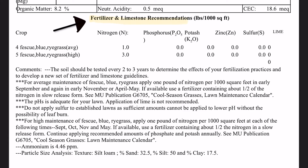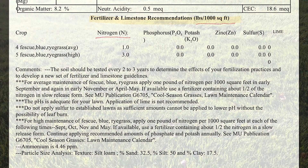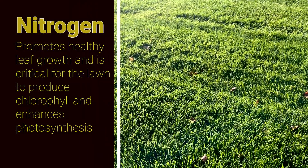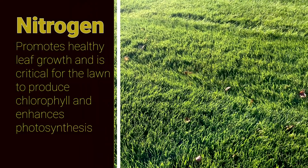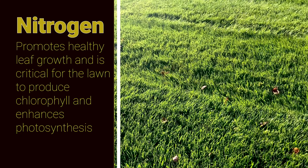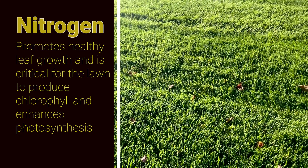Last, we look at the fertilizer and limestone recommendations. Here we see various chemicals contained in fertilizers and how much to apply in pounds per 1,000 square feet. The only recommendation from the soil test report is to apply nitrogen at a level of 3 pounds per 1,000 square feet for the fescue, blue, and ryegrass lawns. Nitrogen promotes healthy leaf growth and is critical for the lawn to produce chlorophyll and enhances photosynthesis.